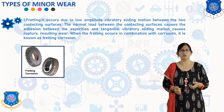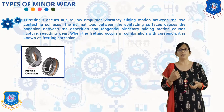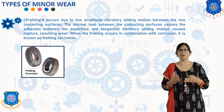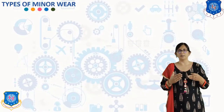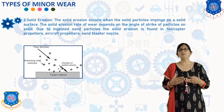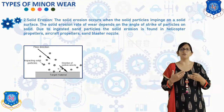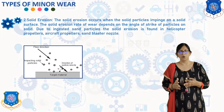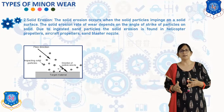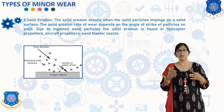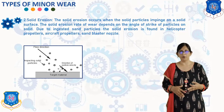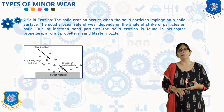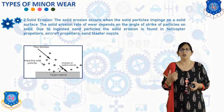The next minor wear type is solid erosion, which occurs when solid particles impinge on a solid surface. The solid erosion rate of wear depends on the angle of strike of particles on the solid. Due to ingested solid particles, solid erosion is found in helicopters, aircraft propellers, sandblaster nozzles, etc.